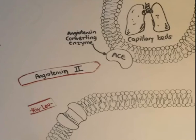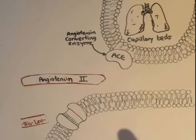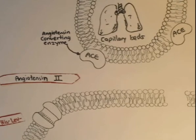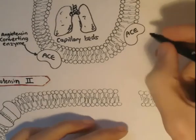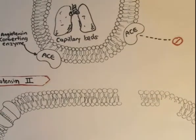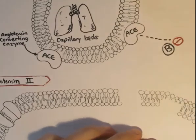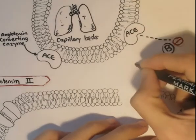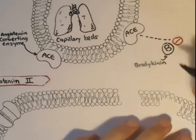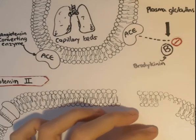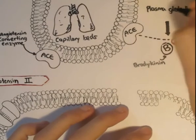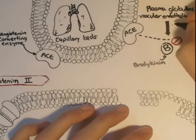It should be noted that ACE exists all over the body; it's just found more in capillary beds because of its high density. It should also be noted that the enzyme ACE has another function, in that it actually inhibits a vasodilator called bradykinin. A vasodilator is something that dilates the blood vessels, giving low blood pressure basically. So ACE inhibits the function of bradykinin, which is secreted by plasma globulins and also vascular endothelium cells.